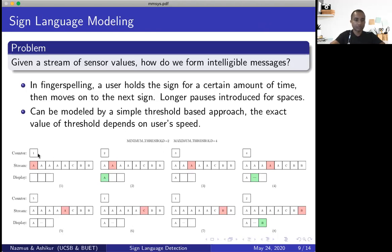So, for example, at the first figure, we set our counter to 1. We detect a, but we do not display anything. In the second figure, we've already seen two a's. So we set the counter to 2. Now, as it is equal to minimum threshold, we now display a.